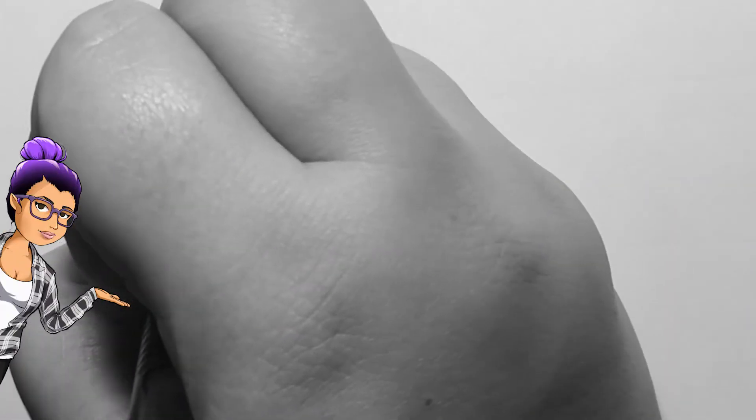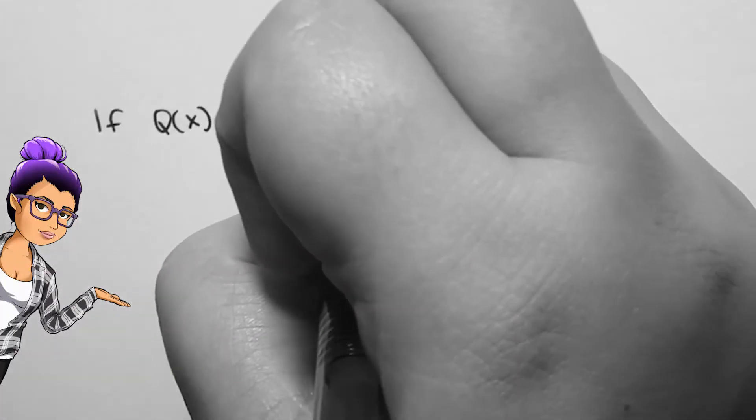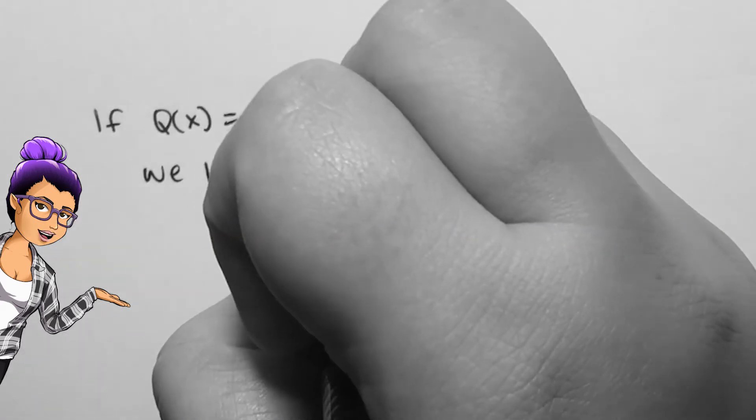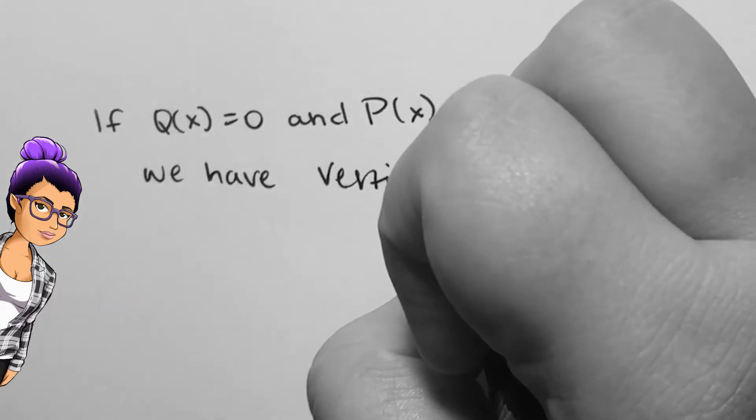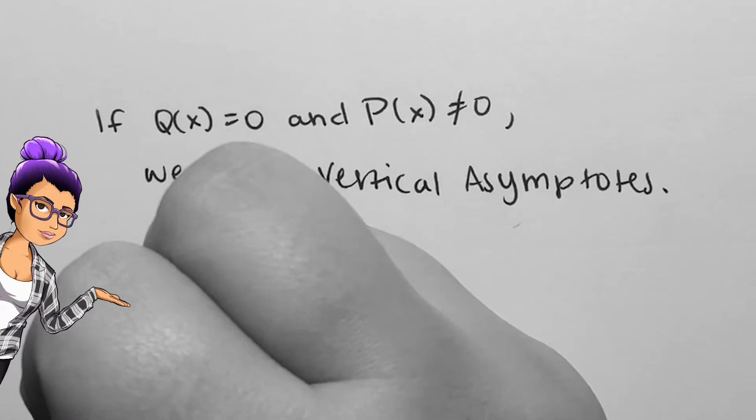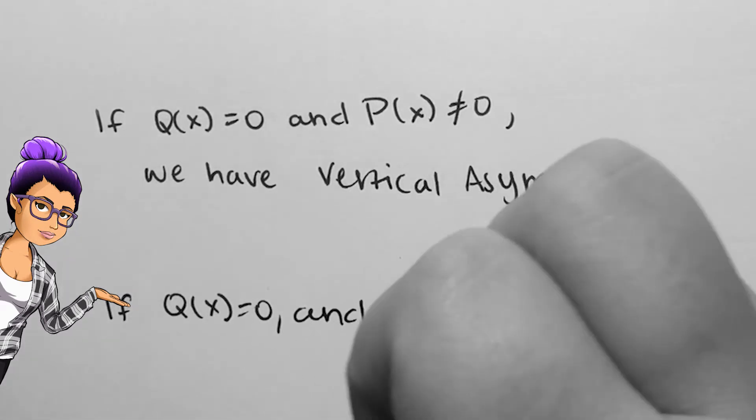There will be vertical asymptotes everywhere that q is 0 while p is not 0. If q and p are 0 at the same time, then we have a removable discontinuity, or cancelable factor, which will present as a hole on the graph.